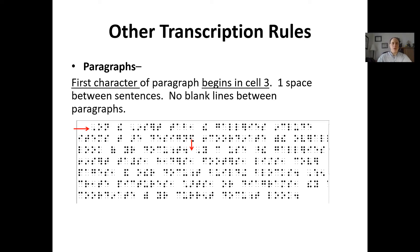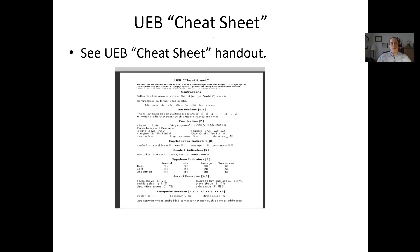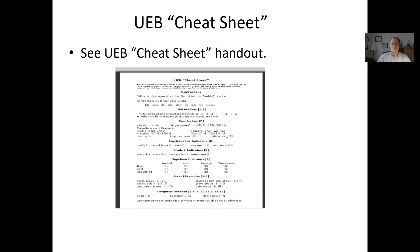Remember that for a standard paragraph, the first character begins in cell three — that's an indent to cell three. We only place one space between sentences in braille, not two. I'm going to link a UEB cheat sheet to give everybody a refresher on all of the UEB alphabet letters and symbols — we'll place that as a link below the video.